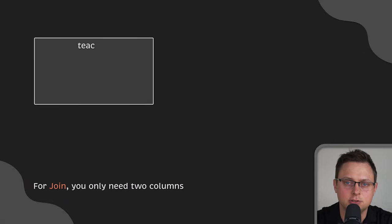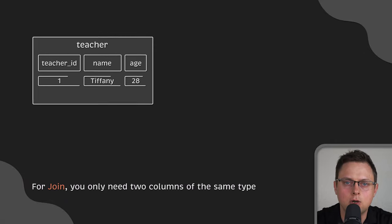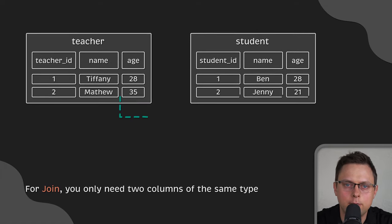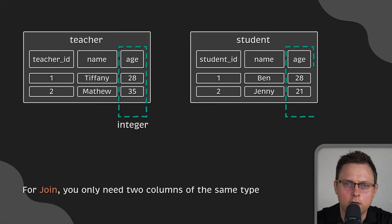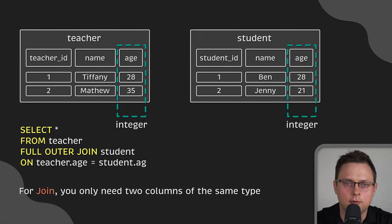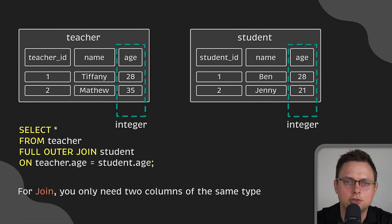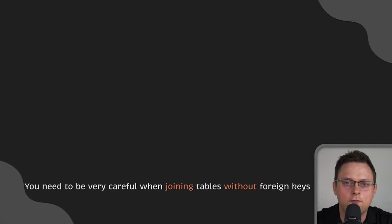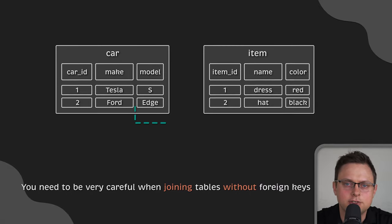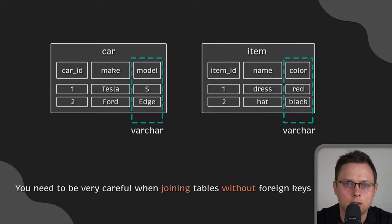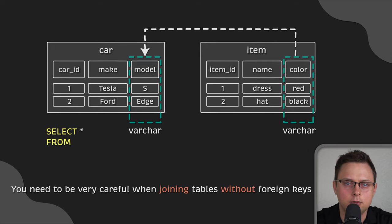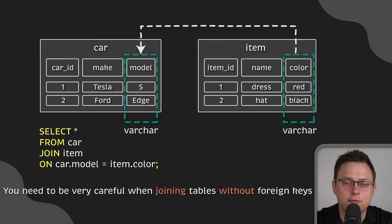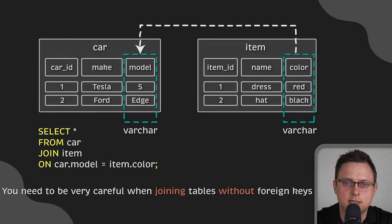For a join operation, technically you only need two columns of the same type, one from each table. It does not matter if they are primary or foreign keys. For instance, you can join tables using the age column from both the teacher and student tables. However, you need to be very careful when joining tables without foreign keys. For example, you could technically join a car table using the model column and an item table using the color column — they have the same type, so it's possible, but in reality it wouldn't make any sense.